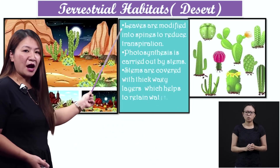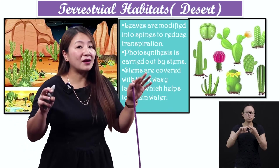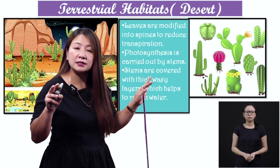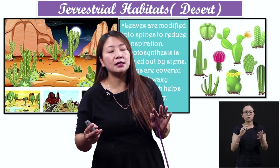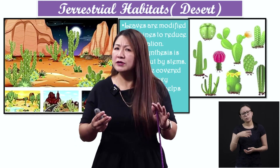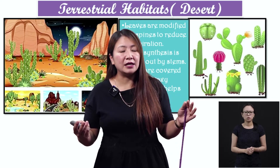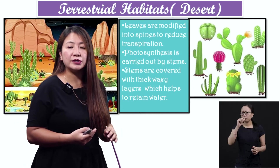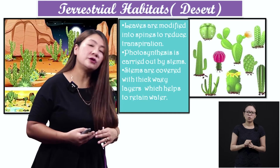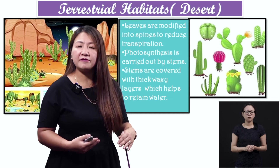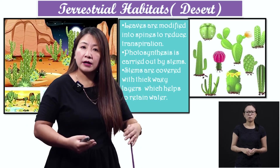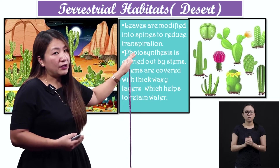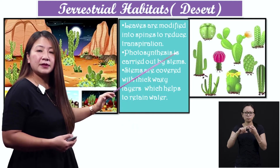Here, leaves are modified into spines — spines means the thorns. So instead of leaves, the leaves are modified into thorns or spines. Why? Because in a desert, water is very scarce, meaning water is not abundant. They cannot afford to lose water through the leaves. So the desert plants' leaves are modified into spines in order to reduce transpiration. Transpiration means the loss of water from the leaf surface — plants respire and perspire, removing excess water.